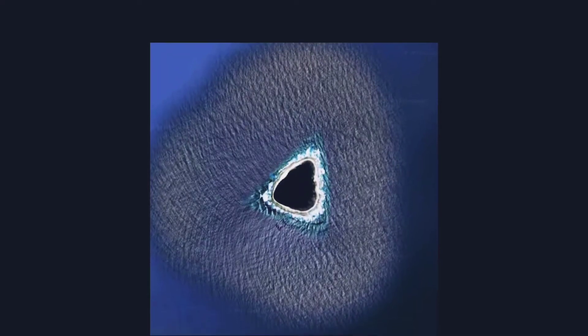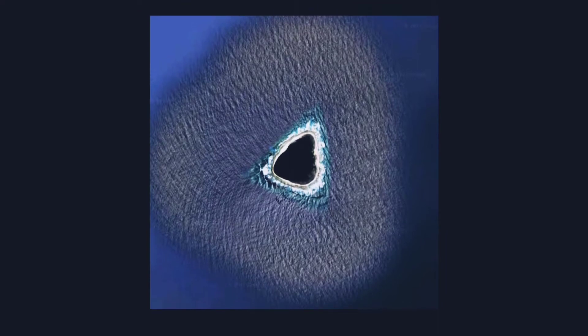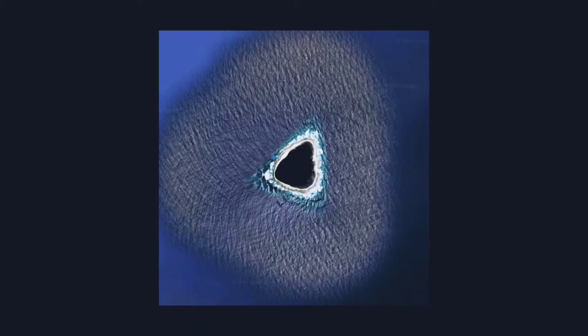Mysterious island with hollow center goes viral, sparks curiosity among netizens. Netizens were roped in for a curiosity-induced debate as a Google Maps image did rounds on Reddit. The image showcases a triangular landmass with a black hollow center surrounded by blue waters.